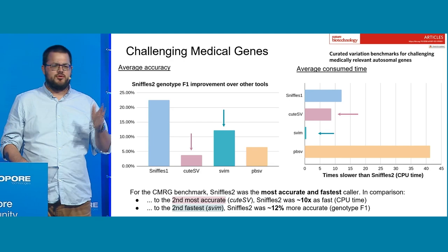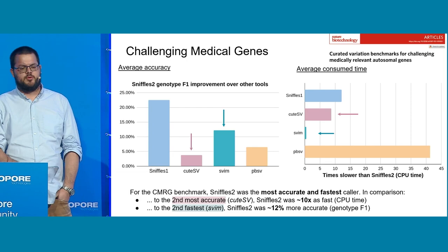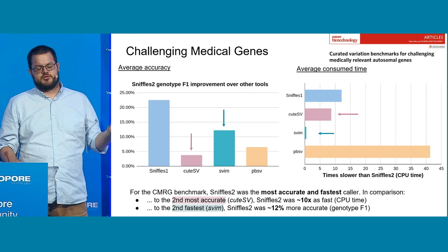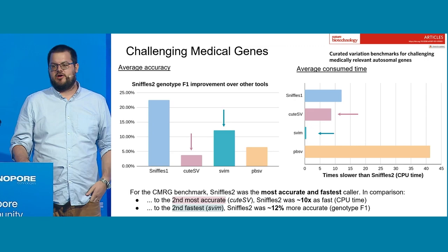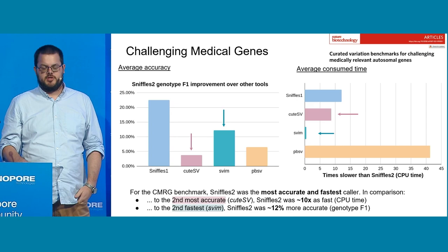In other benchmarks we also looked into challenging medical genes — around 200 to 220 medical genes that we recently published in a Nature Biotech paper together with genome-in-a-bottle. Compared to the second most accurate tool, PBSV, Sniffles 2 was around 10 times faster on CPU time. And compared to the second fastest, Vim, Sniffles 2 was 12% more accurate. So I think we really tried to push the field forward with the development of Sniffles 2. But this is just germline calling — kind of interesting, a little bit boring.